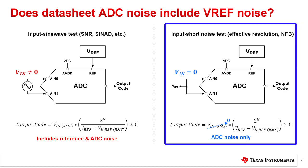Comparatively, applying a zero-volt input to characterize an ADC results in no reference noise seen in the output code. This is true for parameters that use the input short method such as effective resolution or noise-free bits and is represented by the image and equation on the right. However, real systems always need to be able to measure non-zero input voltages, so reference noise will always have some effect on the ADC's conversion result.